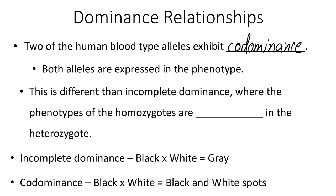This is different than incomplete dominance, where the phenotypes of the homozygotes are blended in the heterozygotes. To compare: with incomplete dominance, if mice with black fur and mice with white fur are bred together and all offspring have gray fur, that's incomplete dominance. But if the offspring instead have black and white spots or patches, that is co-dominance, because both fully black and fully white fur are present in the offspring — both phenotypes are represented.